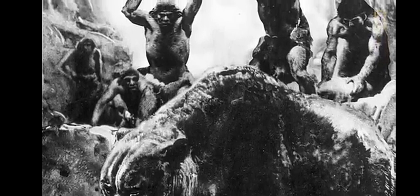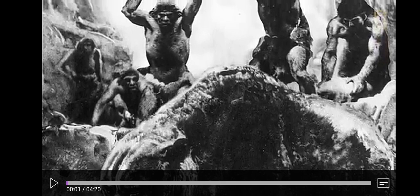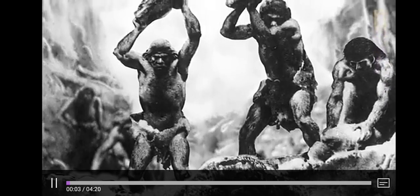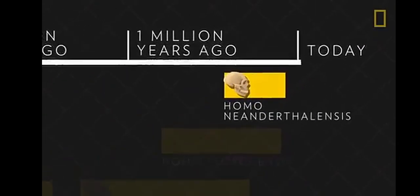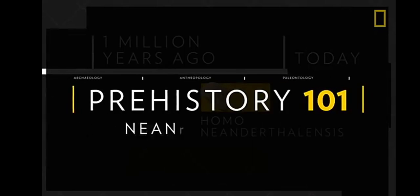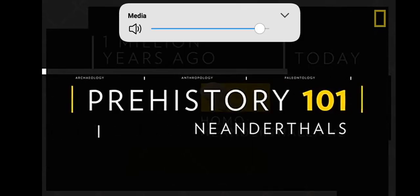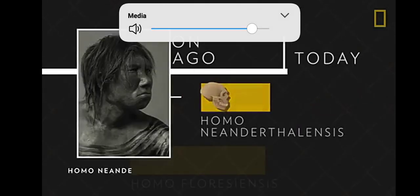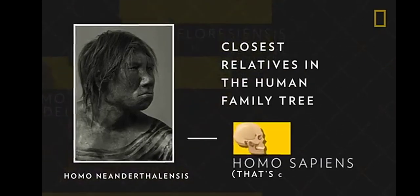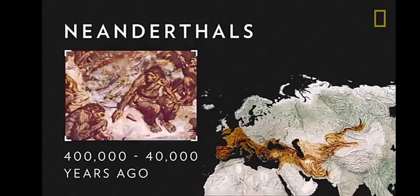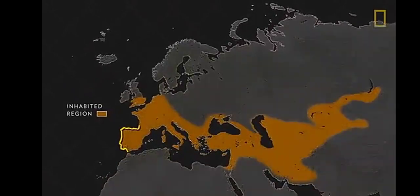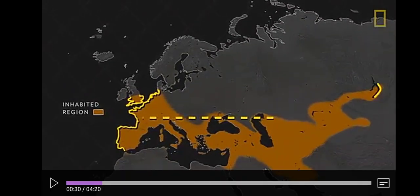Here is a video about Homo Neanderthal. Neanderthals are often depicted as brutish cavemen, but science shows that our early ancestors were actually quite advanced. Neanderthals, or Homo Neanderthalensis, are our closest relatives in the human family tree. The species lived from about 400,000 to 40,000 years ago and inhabited an area stretching as far west as Europe's Atlantic coast.